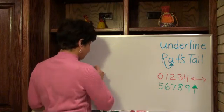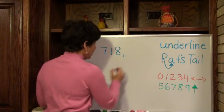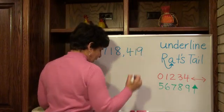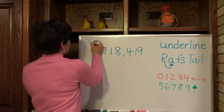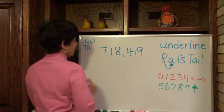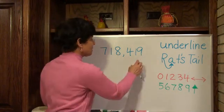So let's try this number now. 718,419 and I'm going to round this to the nearest hundred thousand. Hundred thousandths place. Let's see. I need to underline that number. So let's see what's in the one hundred thousandths place.